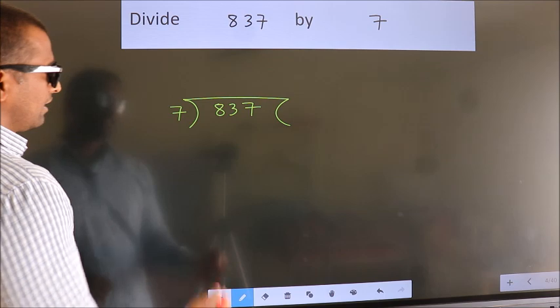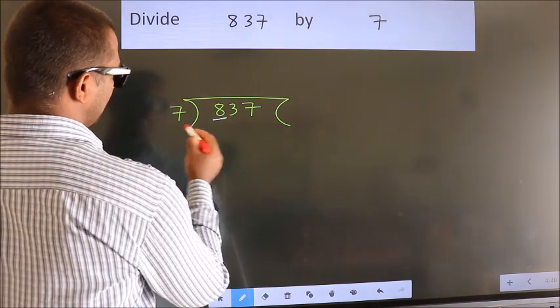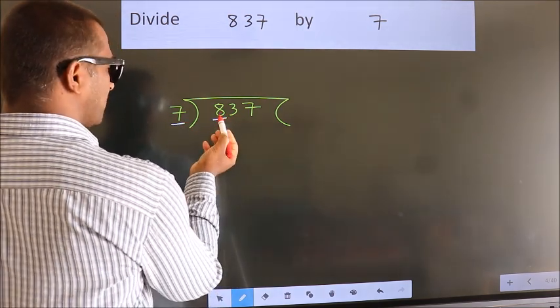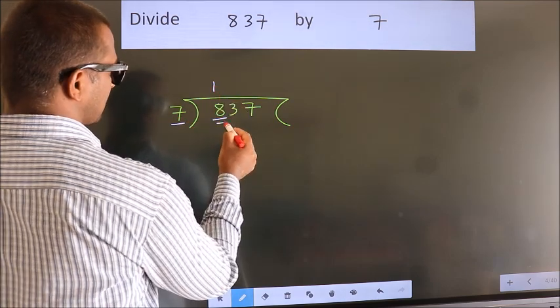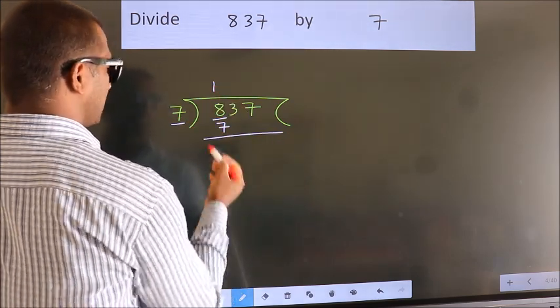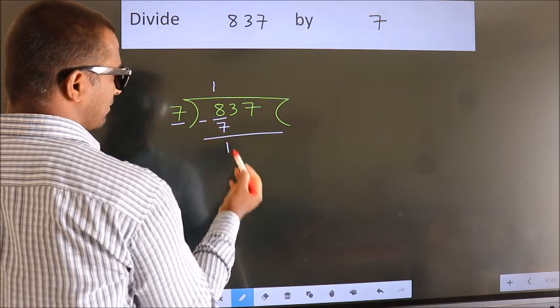Next. Here we have 8, here 7. A number close to 8 in 7 table is 7 once 7. Now we should subtract, we get 1.